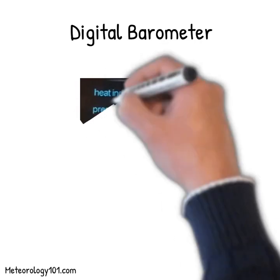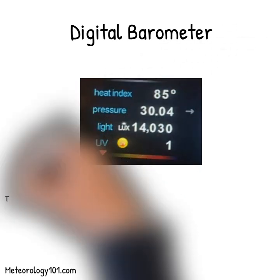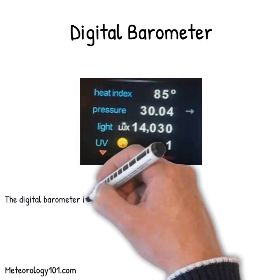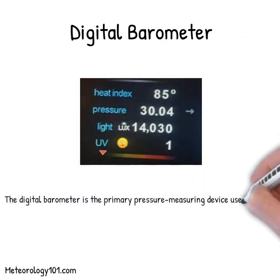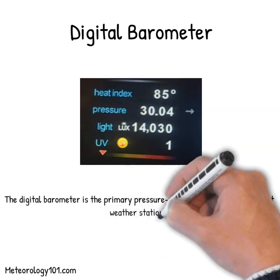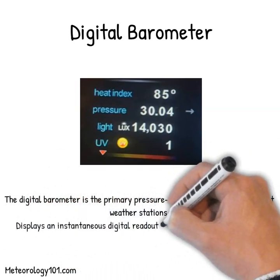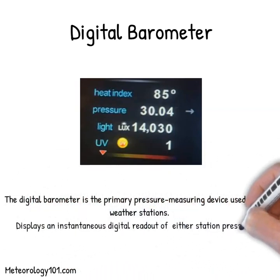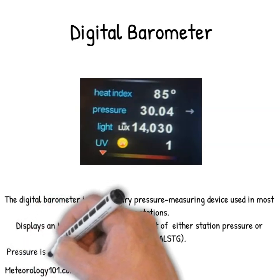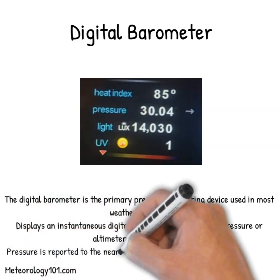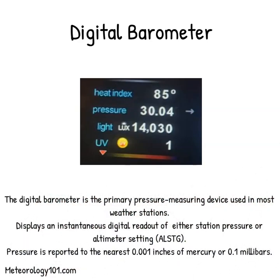The digital barometer is the primary pressure measuring device used in most weather stations. It displays an instantaneous digital readout of either station pressure or altimeter setting. Pressure is reported to the nearest 0.001 inches of mercury or 0.1 millibars.